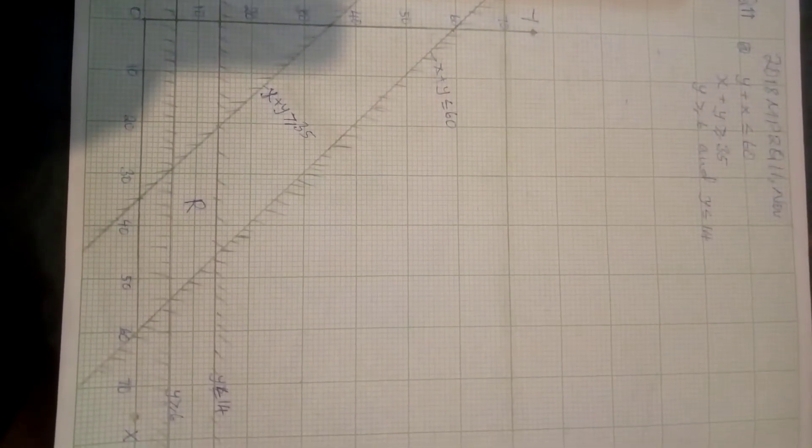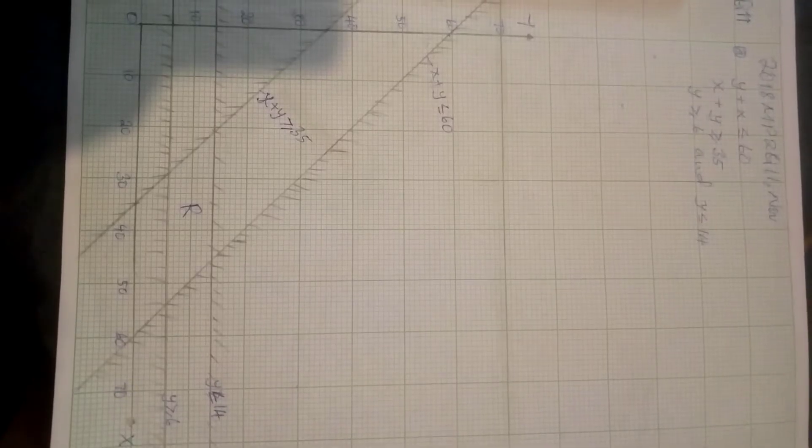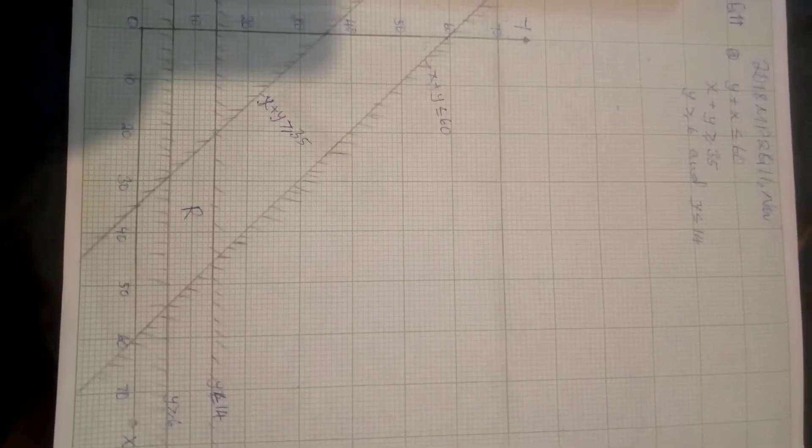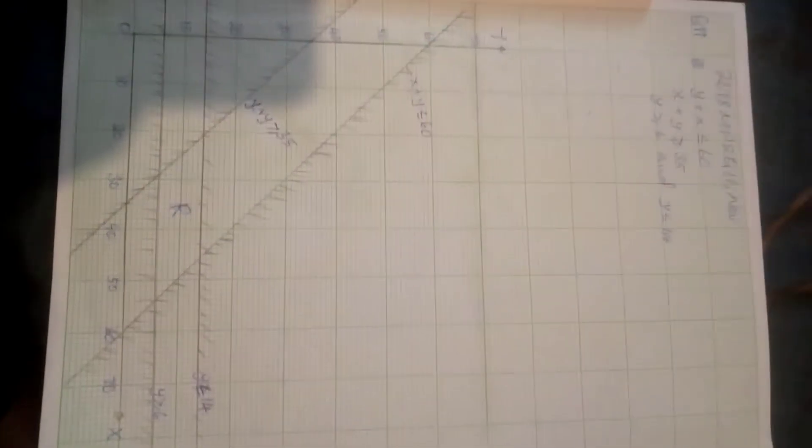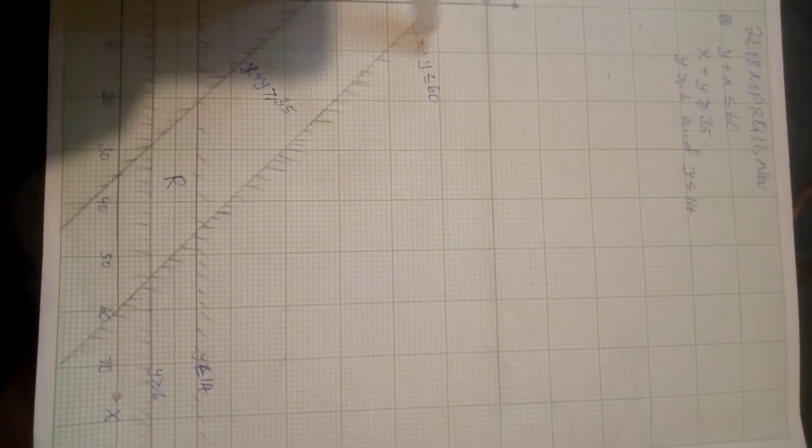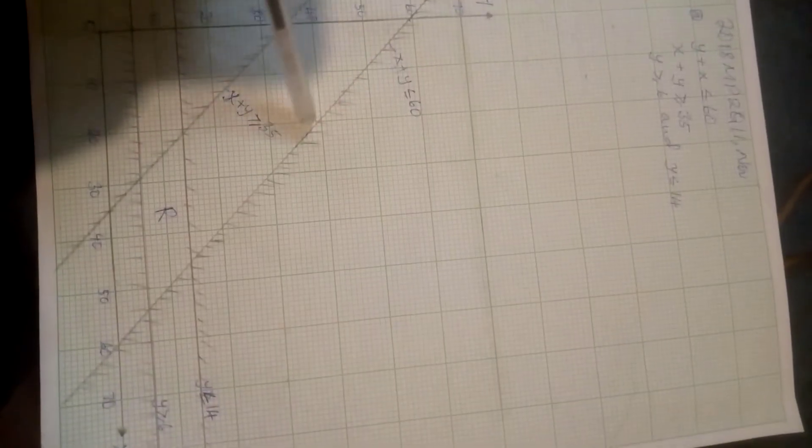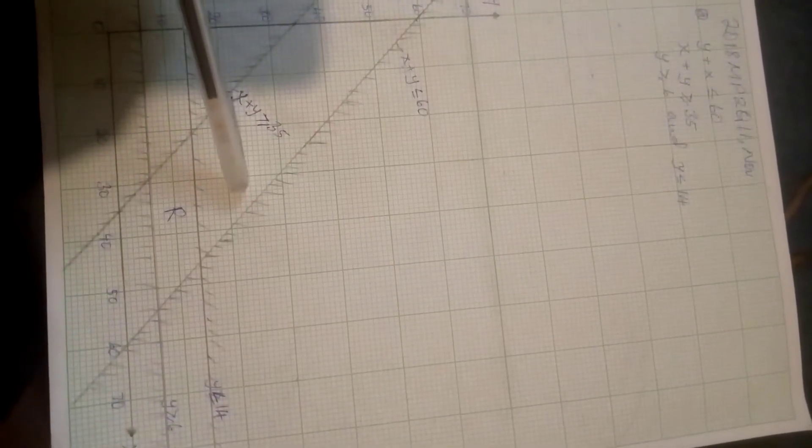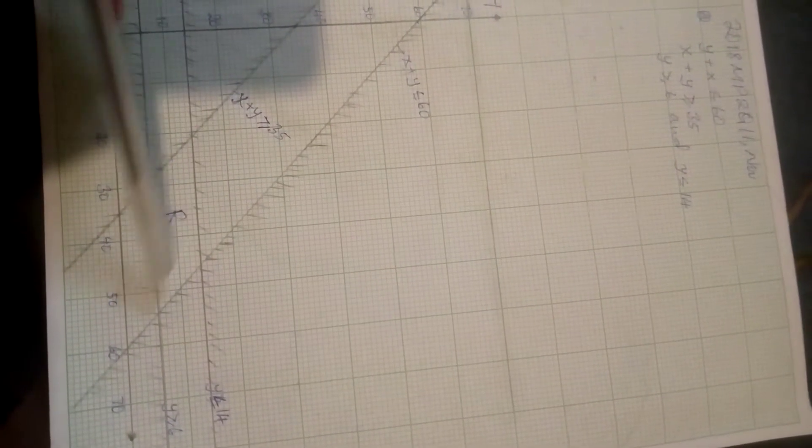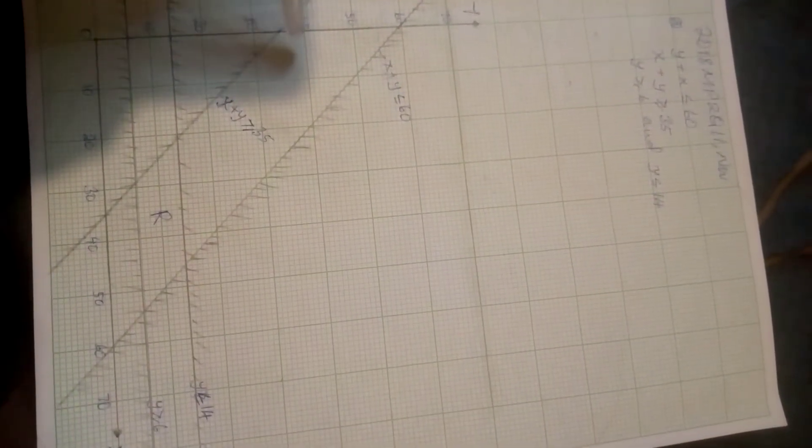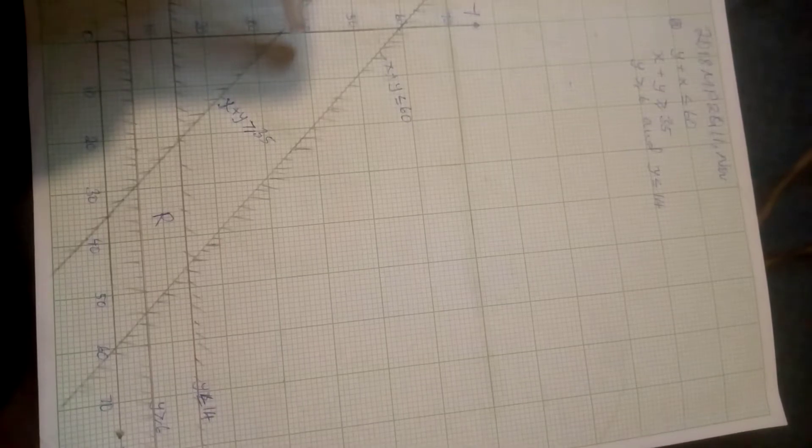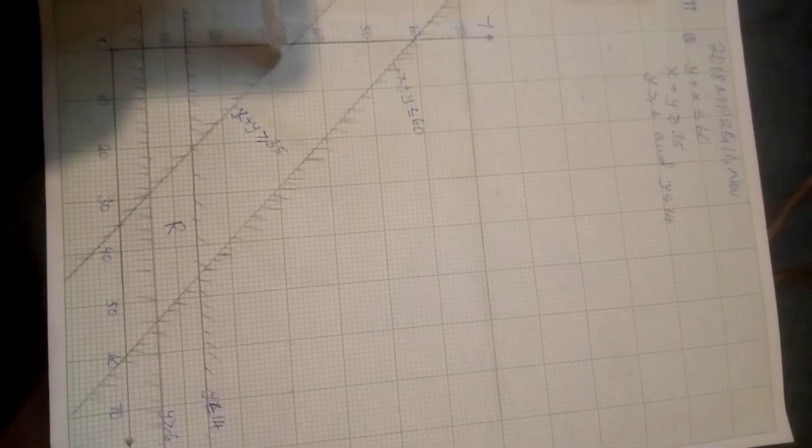To represent the inequalities on the graph paper, we have x plus y less than or equal to 60, which is this one. And we have x plus y greater than or equal to 35. We have this one here.